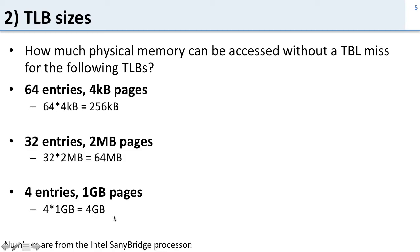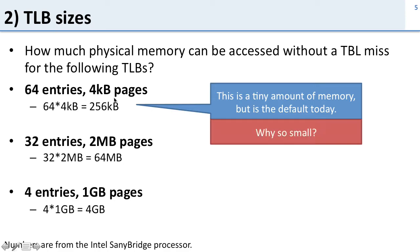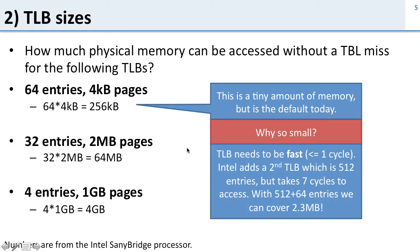These numbers are from Intel's Sandy Bridge processor. On Sandy Bridge you get to choose: 64 entries in the level-one TLB at four kilobyte pages, 32 entries if you use two megabyte pages, or only four entries if you use one gigabyte pages — so there's a trade-off. Notice this is a tiny amount of memory that the TLB can access, but four kilobyte pages are the default today. The TLB needs to be fast — one cycle or less.